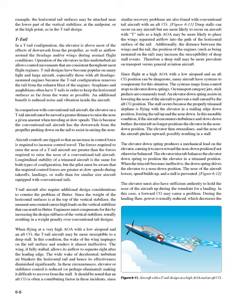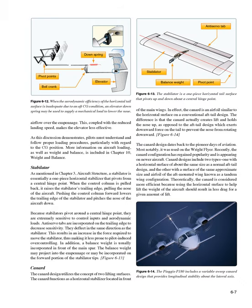The elevator must also have sufficient authority to hold the nose up during the landing roundout. A forward CG may cause problems here—during the landing flare, power is usually reduced, decreasing airflow over the empennage, and combined with reduced landing speed, the elevator becomes less effective. Pilots must understand and follow proper loading procedures, particularly regarding CG position. More information on aircraft loading, weight, and balance is included in Chapter 10.